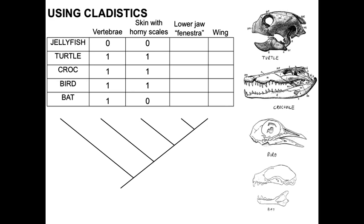If we look at skin with horny, keratinized scales — jellyfish do not have this, so the absence would be given a character state of zero. Turtles have scales, crocodilians have scales, birds have scales, but bats do not have scales. Bats are mammals and have fur. So bats would get a character state of zero here because they lack skin with horny, keratinized scales, whereas turtles, crocs, and birds would all get a one because they do have that feature present.